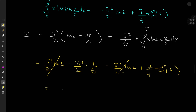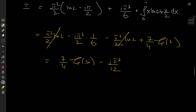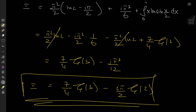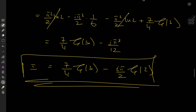Finally, we have 7/4 · ζ(3) minus iπ³/12. Since π²/6 equals ζ(2), we can write this as 7/4 · ζ(3) minus iπ/2 · ζ(2). It's a beautiful result involving π, the imaginary unit, ζ(2), and ζ(3). Honorable mentions to the numbers 7, 4, and 2.